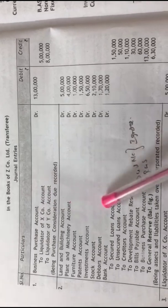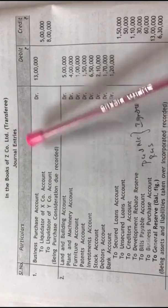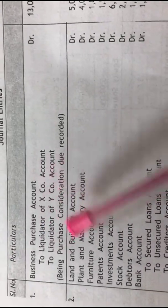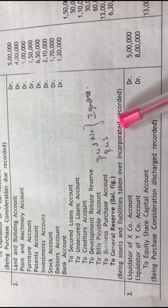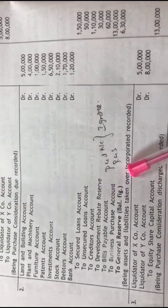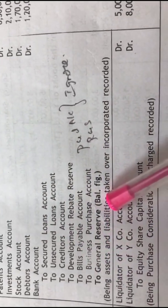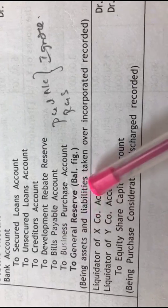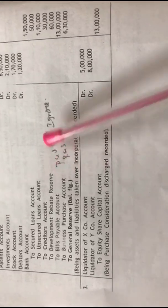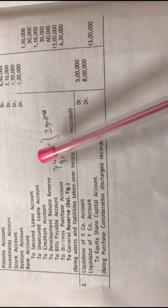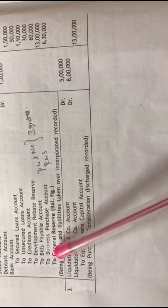Now let us look into the opening entries in the books of the transferee company, Z Company Limited. The first entry is for PC due: business purchase account Dr. to liquidator of X company — Rs. 5 lakh, and liquidator of Y company — Rs. 8 lakh. The second entry is for incorporation of assets and liabilities. Since this is amalgamation in the nature of merger, the balancing figure should be transferred to general reserve account. Therefore, do not write profit and loss account balance and reserves and surplus balance of X and Y companies separately, because these items are included in general reserve.